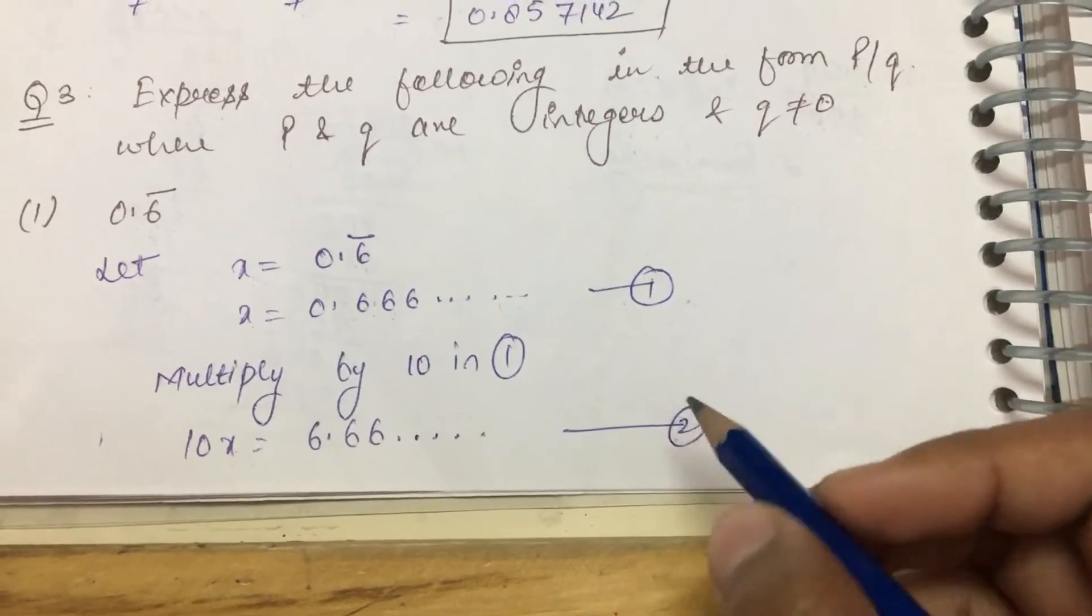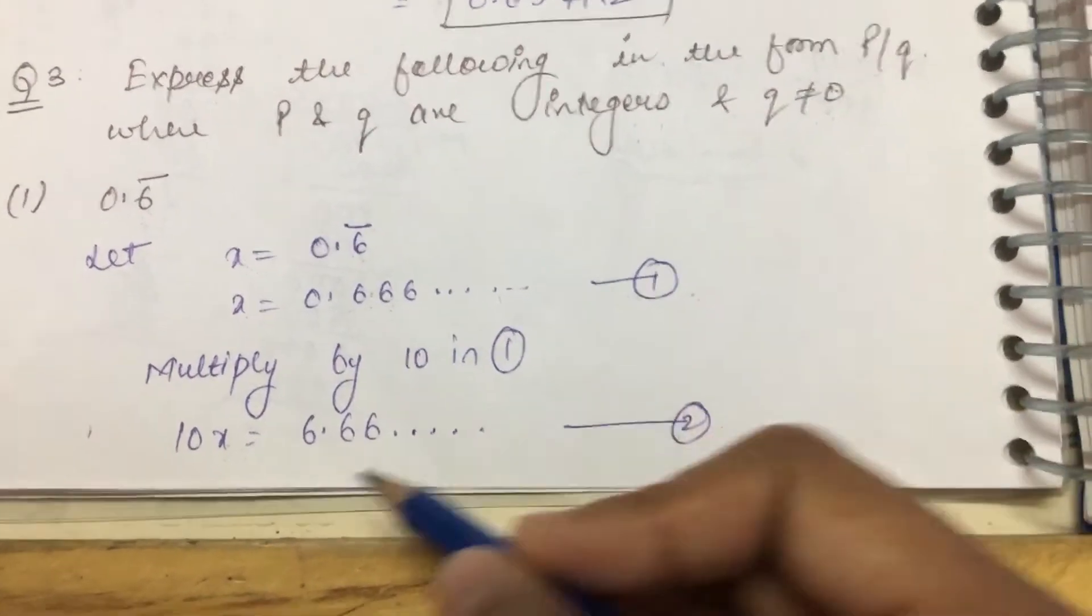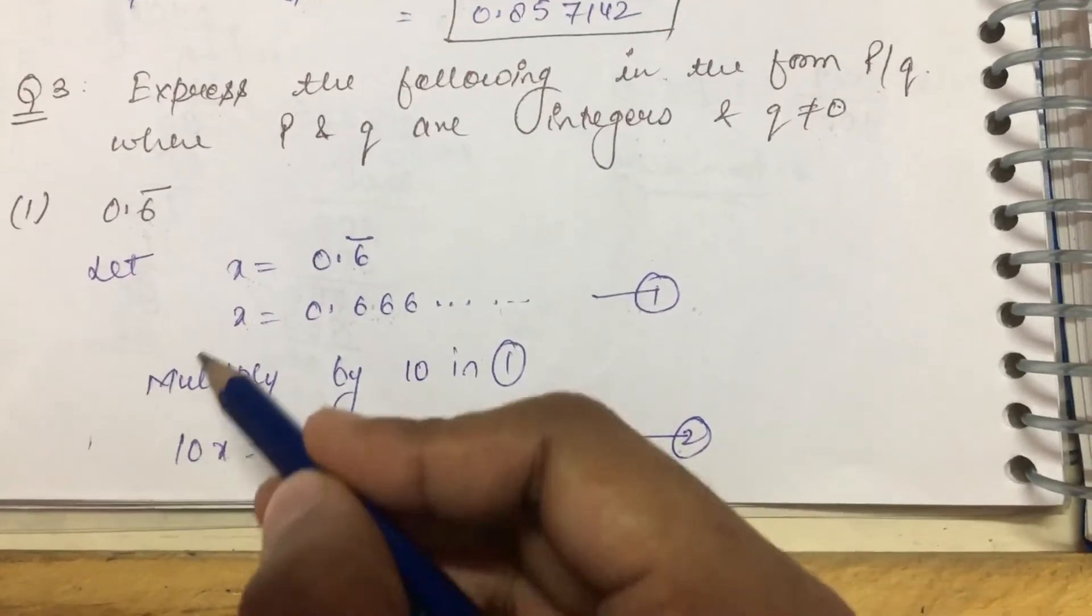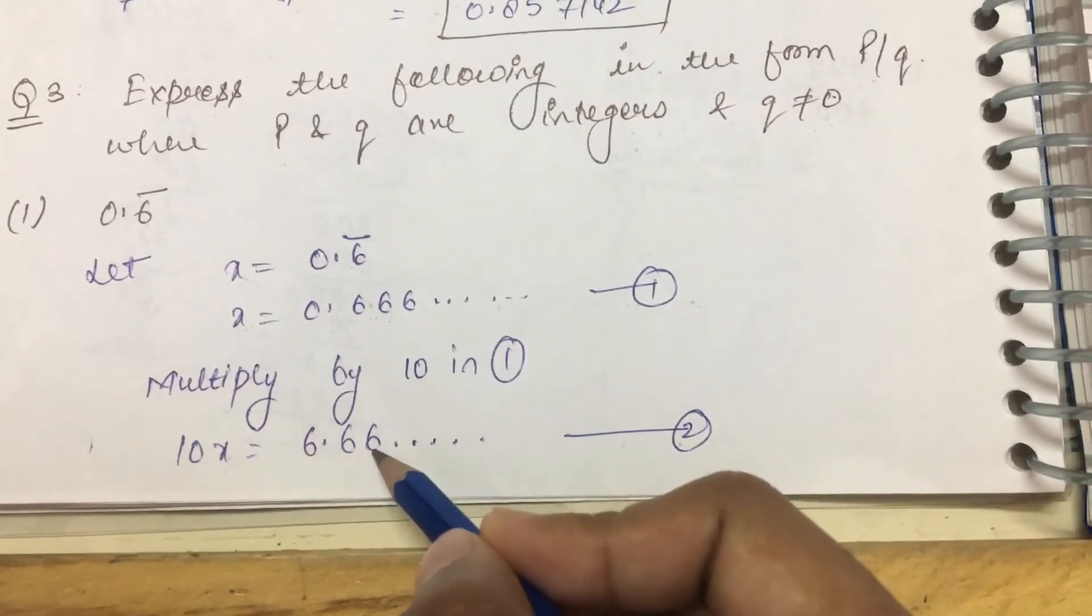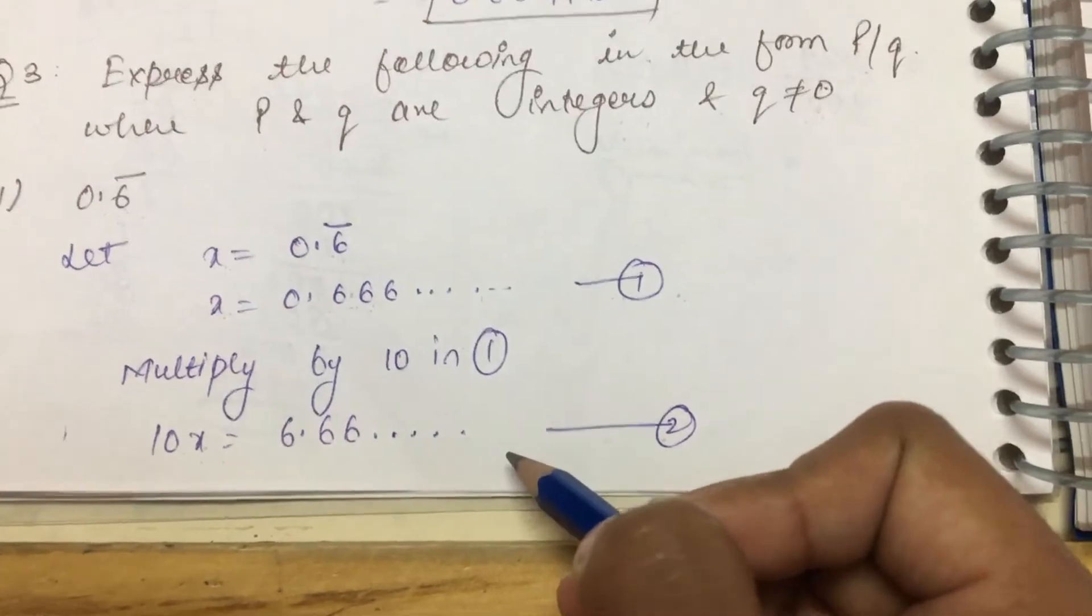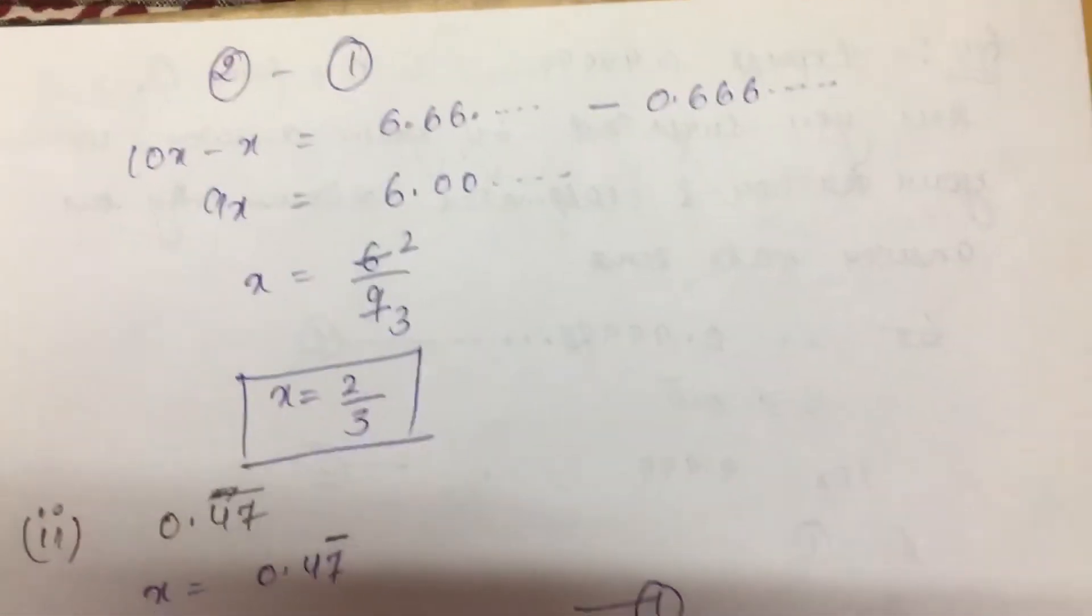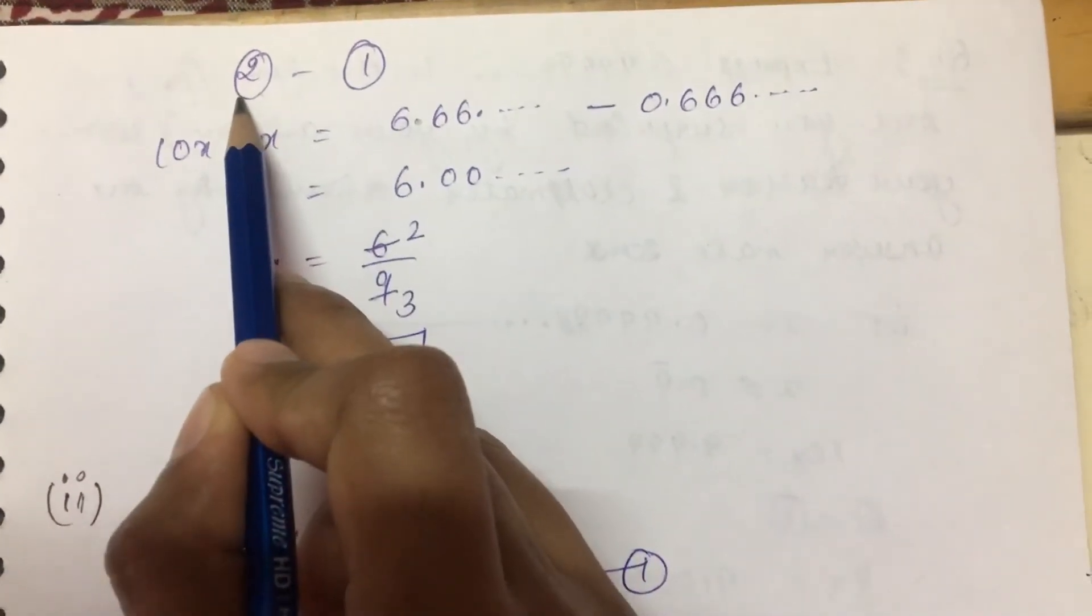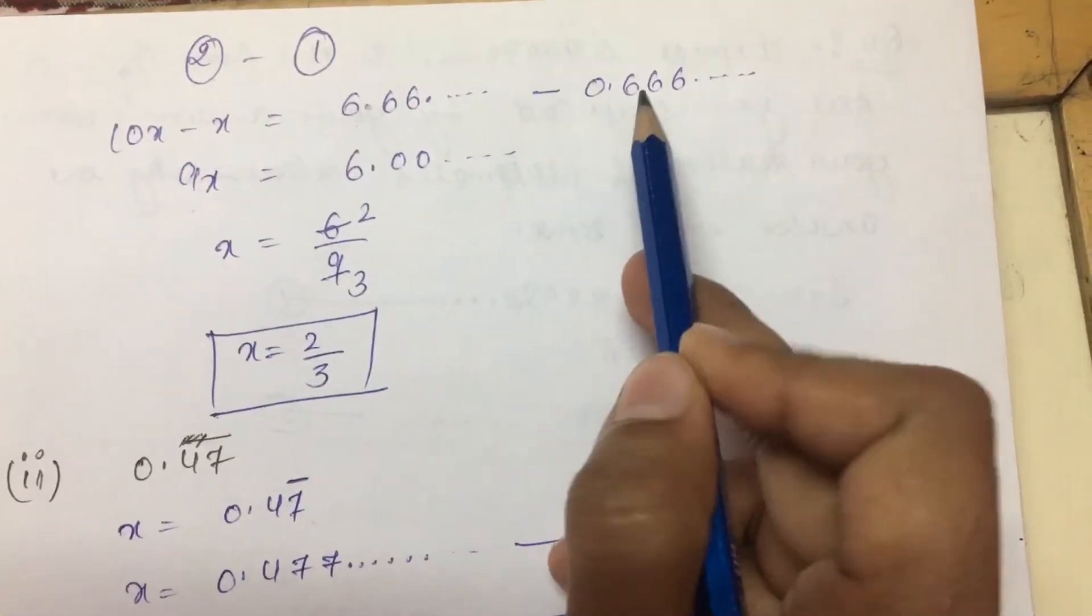Then we subtract the first equation from the second equation. When we subtract, 10x minus x gives 9x. And 6.666 minus 0.666 equals what? Let's see.